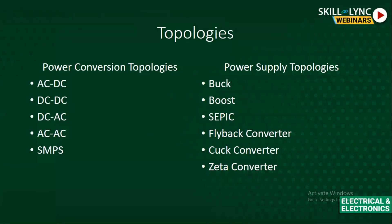The currently used topologies for energy conversion include: AC to DC, DC to DC, DC to AC, AC to AC, and SMPS. These are the widely used power conversion topologies. Power supply topologies include the buck converter, boost, SEPIC, flyback converter, CUK converter, and Zeta converter. These are the power supply topologies widely used today.